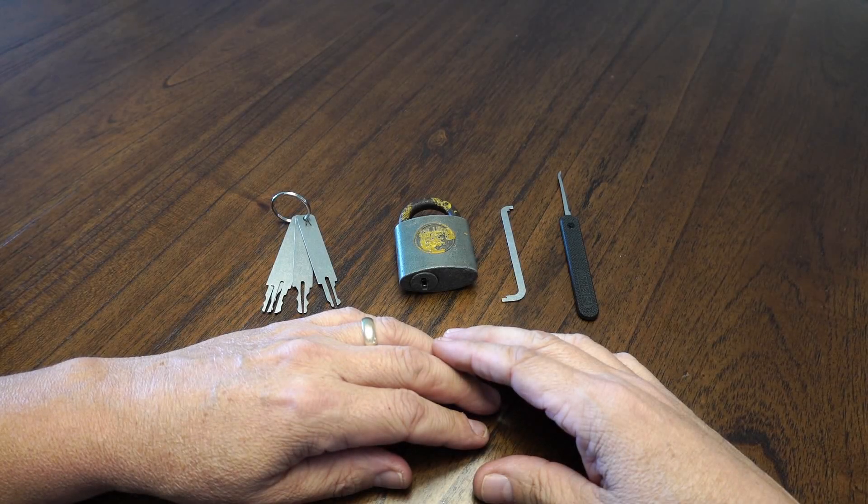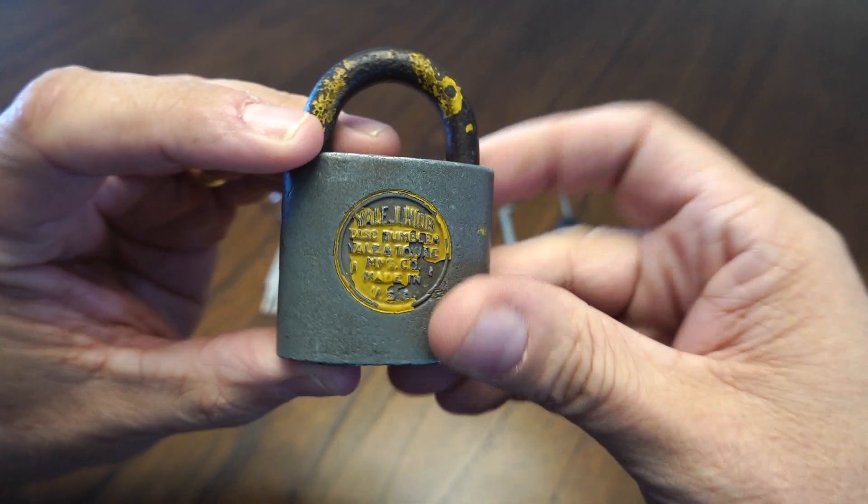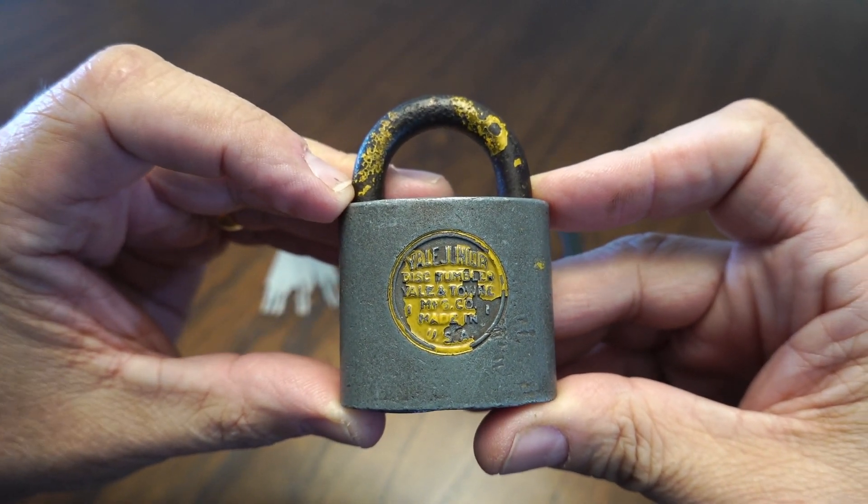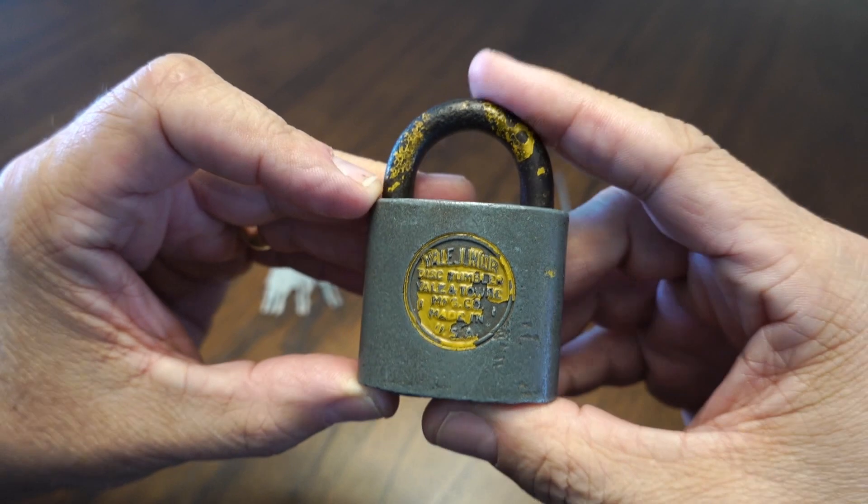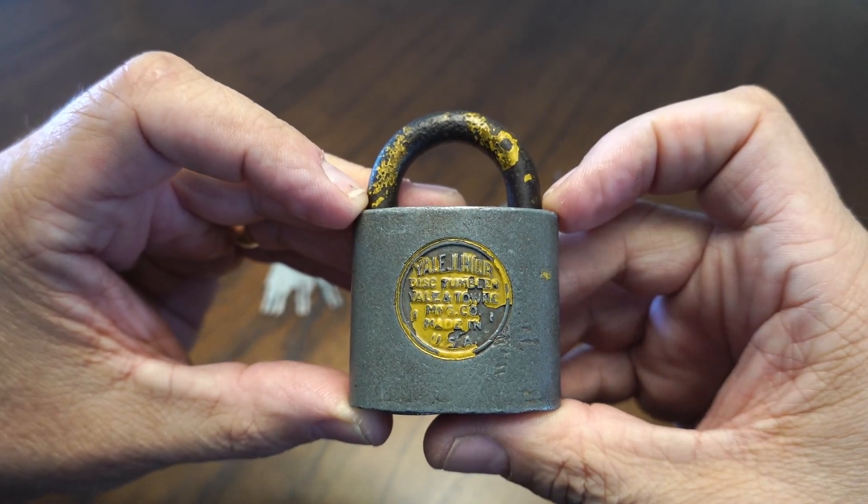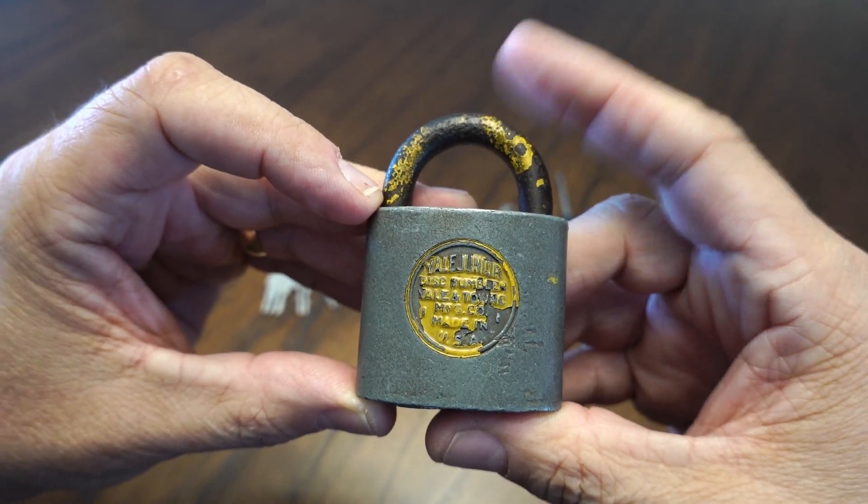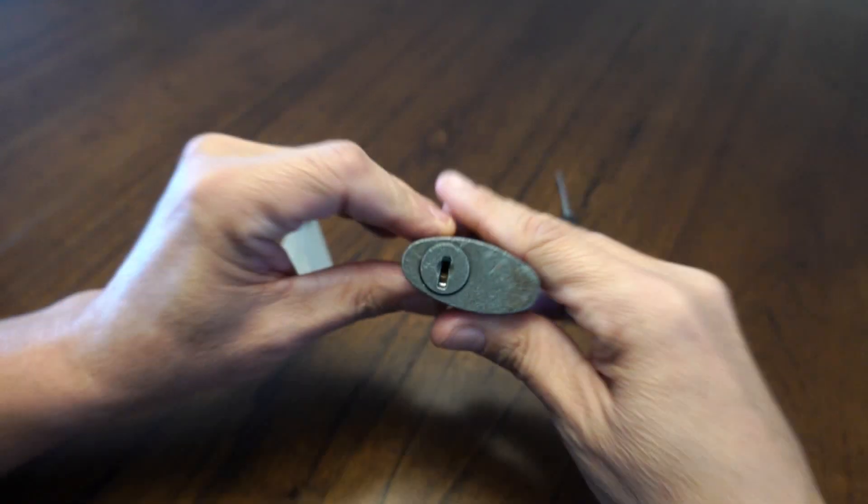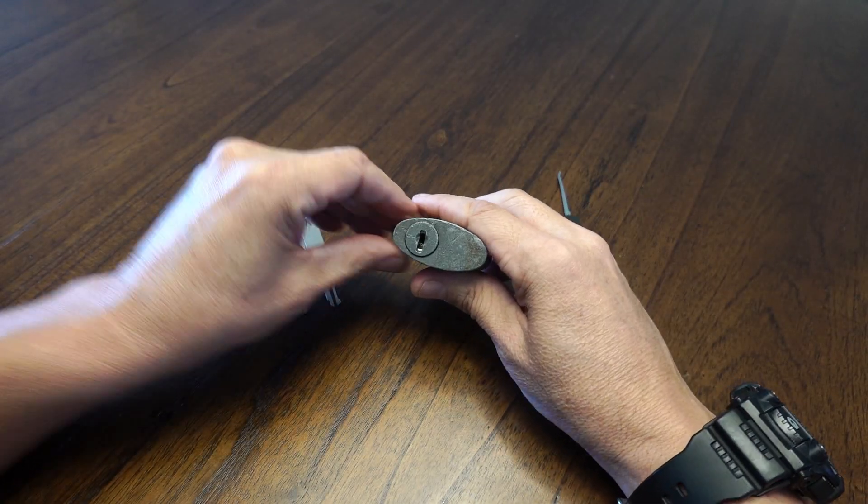This is the lock picking newbie, and what I have for you today is this Yale junior disc tumbler lock. It says Yale and Town Manufacturing Company, made in USA, and it is a wafer lock. So let us attempt...